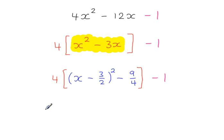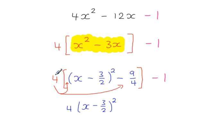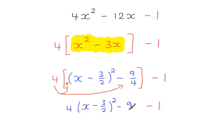Multiply out the square brackets: that 4 multiplies here and it multiplies this minus 9 over 4. So we have 4 brackets x minus 3 over 2 squared. Multiplying 4 with 9 over 4 — the 4s cancel — gives minus 9. Then there's the constant carrying along, and in the final step we simplify these two constants to get 4 brackets x minus 3 over 2 squared minus 10.